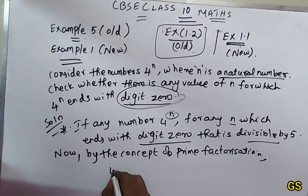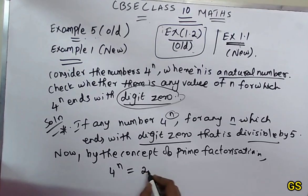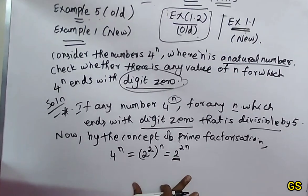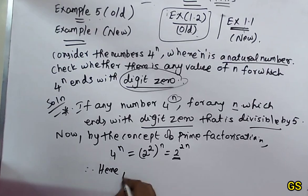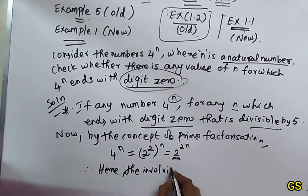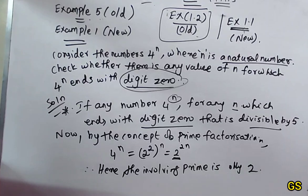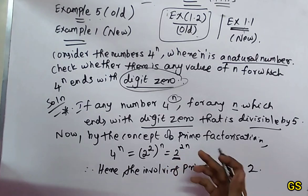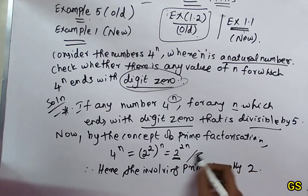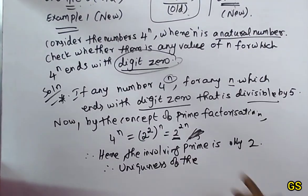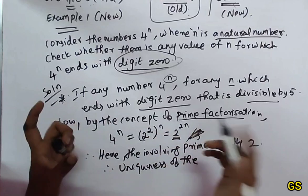4 power n equals 2 squared, whole power n. So, 2 power 2n. Now, 4 is involved in prime as 2. So, the involving prime is only 2. Therefore, by the uniqueness of the prime factorization, the only prime involved is 2.